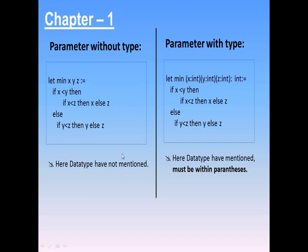Let is a keyword, min is the function name, three variables are there: x, y, z. They find the minimum among the three variables. See the same thing, but with x:int within the parenthesis, y:int within the parenthesis. Here data type is mentioned and it must be within parenthesis. This is the difference between parameter without data type and with data type.